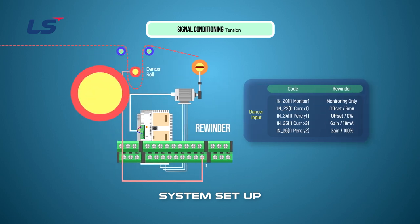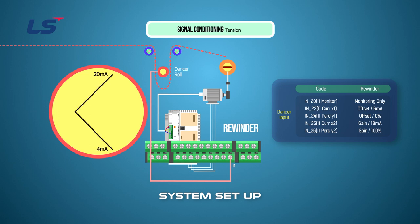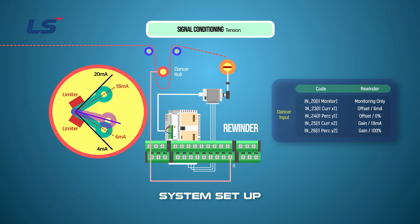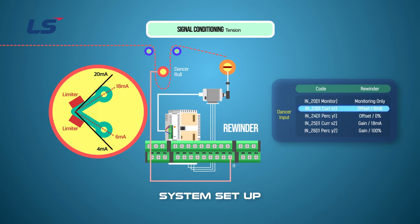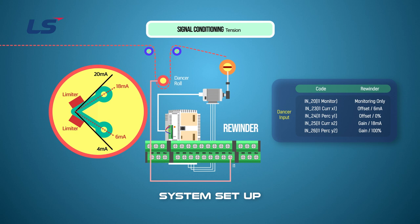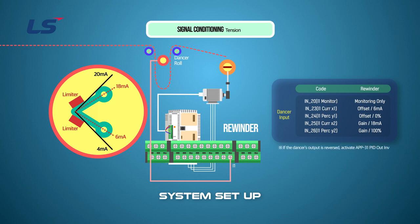Signals for tension are received as analog inputs from dancers or load cells. In this video, we will learn how to adjust the signal using the dancer. If the dancer's output range is 4 to 20 mA, the actual system is equipped with a limiter to set it to a range of 6 to 18 mA due to the dancer's variation range limit. The inverter is set to 0% when receiving 6 mA input and 100% when 18 mA. Adjust the offset to 0% when the dancer is placed at the bottom, and adjust the gain to 100% when the dancer is placed at the top. If the dancer's output is opposite, select APP group number 31, PID Output Inversion function setting.